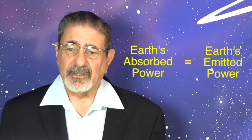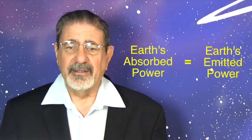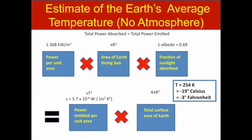The total power absorbed equals the total power emitted — that's what you expect in steady state. The power you absorb is the power per unit area from the sun times the area of the earth facing the sun. We take the earth as a sphere, and take the fraction of sunlight being absorbed. This will equal the power emitted per unit area — how much is re-radiated back out from the earth — times the total surface area of the earth. Can we really do this calculation? Yes, we can.